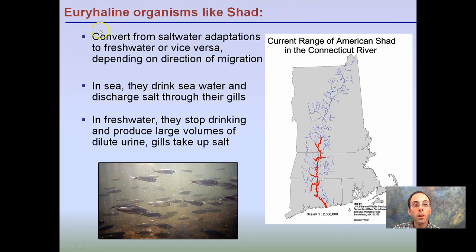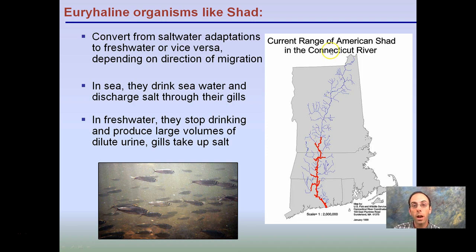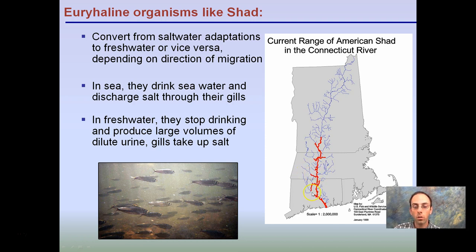These fish convert saltwater adaptations to freshwater and vice versa depending on the direction of migration. In the sea, they drink seawater and discharge salt through the gills. In freshwater, they stop drinking and produce large volumes of dilute urine, and the gills uptake salt. Not every fish can do this — it is a significant stress on the fish. The American shad migrate up the Connecticut River; at the Holyoke Dam they are lifted over and counted, traveling about 80 miles, continuing through Massachusetts, with most spawning in southern Massachusetts and Connecticut waters.